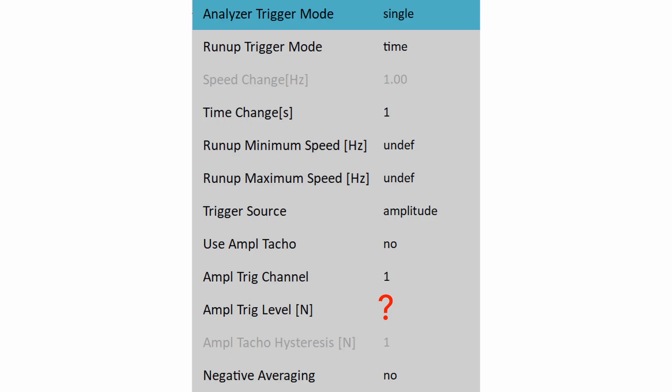Now we must set the trigger source to amplitude and set the amplitude trigger level. Usually we do not know the correct amplitude for triggering and we make the test.